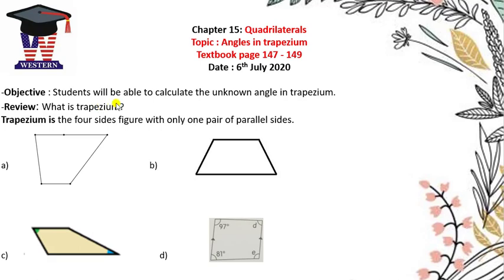What is trapezium? We know that a trapezium is a four-sided figure with only one pair of parallel sides. Here are the different figures of trapezium. Figure A is a trapezium — we have this pair parallel. Figure B also has a pair of parallel sides. Figure C is a four-sided figure and we have one pair of parallel sides here. So it is called trapezium.